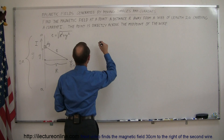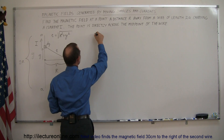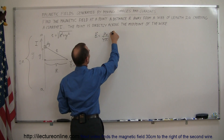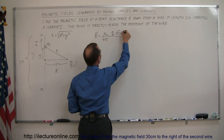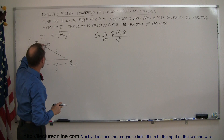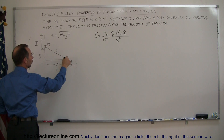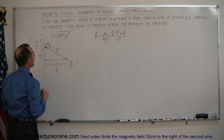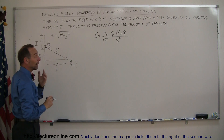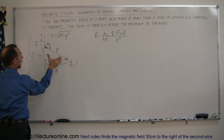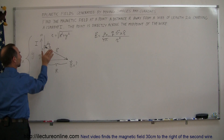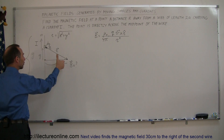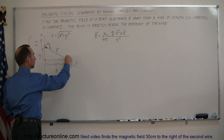The magnetic field B due to a single point charge is given by μ₀ divided by 4π, times the charge times v cross r-hat, divided by r squared, where r-hat is the unit vector from the charge to the point of interest. Using the right-hand rule — point your thumb in the direction of the current, and your fingers point in the direction of the magnetic field — the field goes around the wire in a circle, and to the right of the wire the magnetic field points into the board.